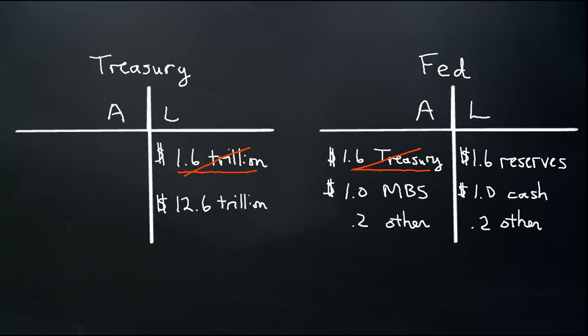That leaves an extra $1.6 trillion that the Treasury can borrow in order to reach up to the debt limit — that's sort of the idea. The question that is interesting to me is what is the effect on the Fed. By eliminating $1.6 trillion worth of its assets, the Fed is now technically insolvent. It has $2.8 trillion worth of liabilities and only $1.2 trillion worth of assets.